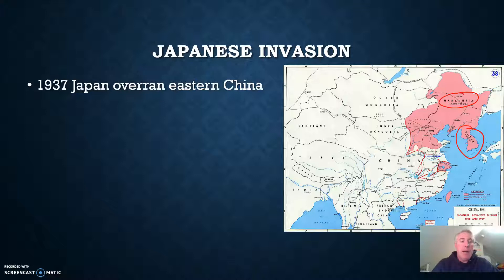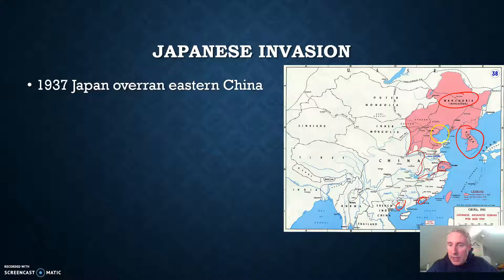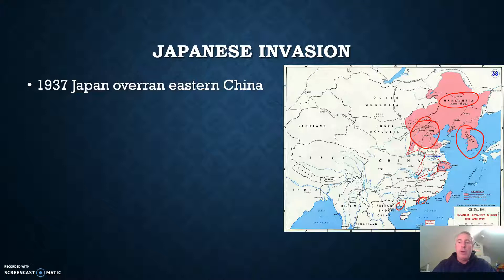The Japanese bombed Chinese cities and overran major ones such as Beijing. They also conquered Guangzhou and Hong Kong. In the Yangtze River Valley, they made sure they conquered that entire area. The Japanese were brutal in their invasion, most notoriously during a period known as the Rape of Nanjing.